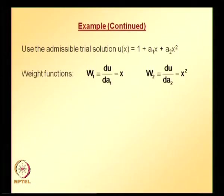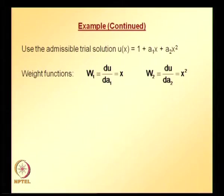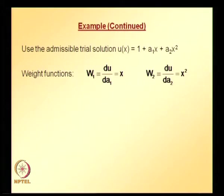Once we have the admissible trial solution, the weight functions for the Galerkin method are defined as the partial derivatives of u with respect to the unknown coefficients. Here there are two unknown coefficients, a₁ and a₂, so we get two weight functions: w₁ = ∂u/∂a₁ = x, and w₂ = ∂u/∂a₂ = x².